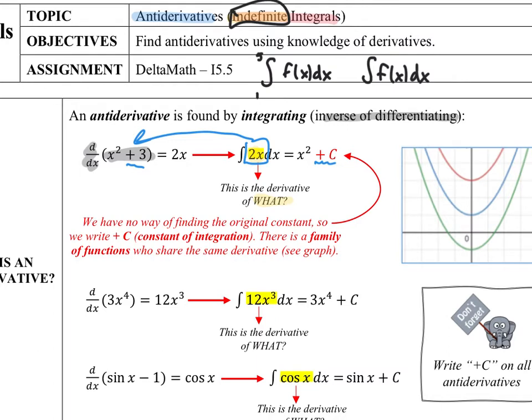For that reason, we write plus c at the end of all antiderivatives to acknowledge that there could have been a constant, but we have no way of finding out what it actually was because it just disappears in the derivative process. As for the family of functions — this plus c results in a vertical shift. When I do that antiderivative and come up with x squared plus c, that results in some quadratic with a vertical shift.